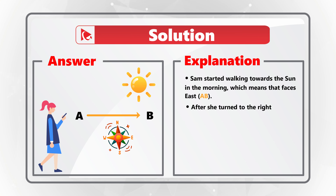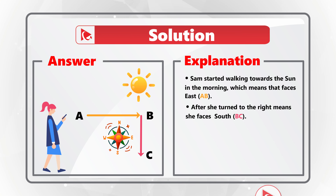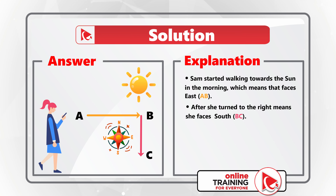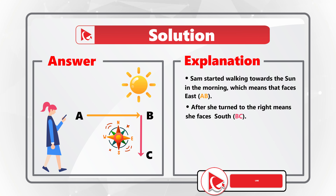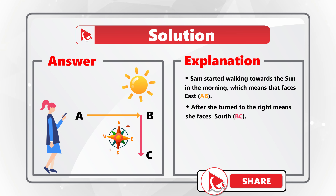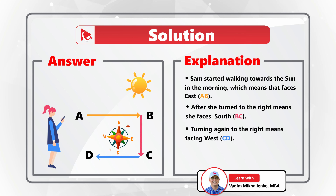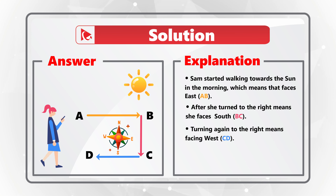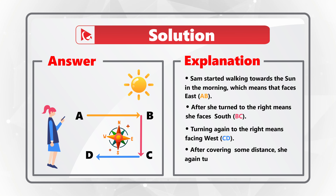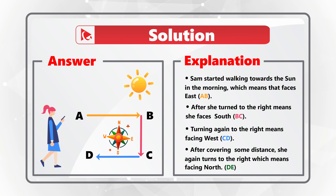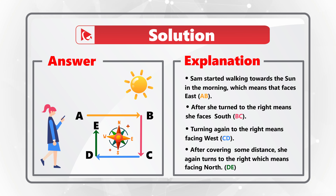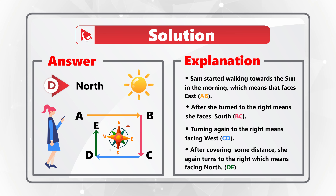After Sam turned to the right, she faces south — her first direction shown by ray AB, and after she turns right it's shown by ray BC. Turning again to the right means Sam is now facing west, shown by ray CD. After covering more distance and turning right once more, she is now facing north, shown by ray DE. So the correct answer is Choice D: North.